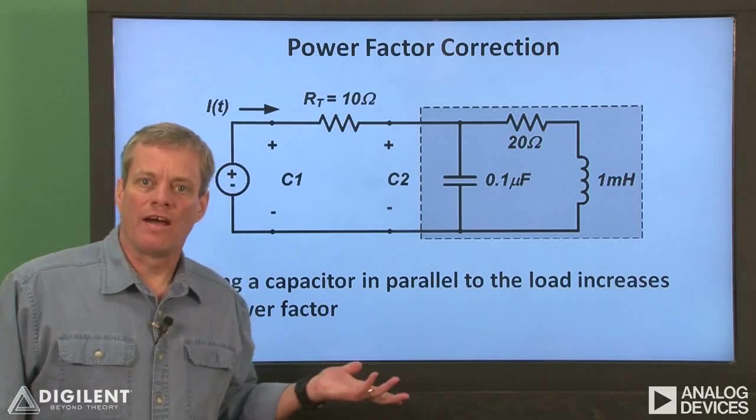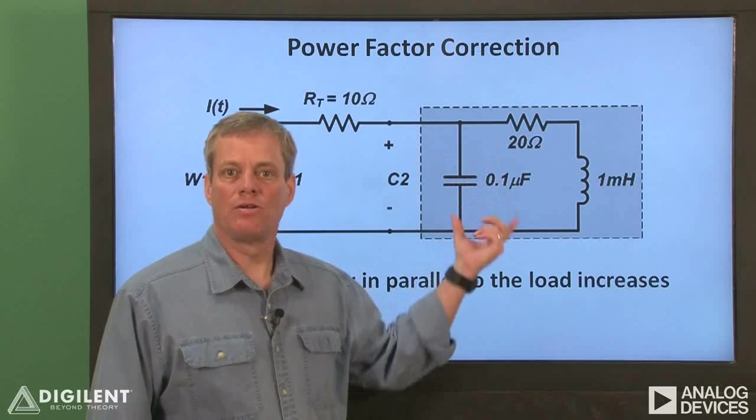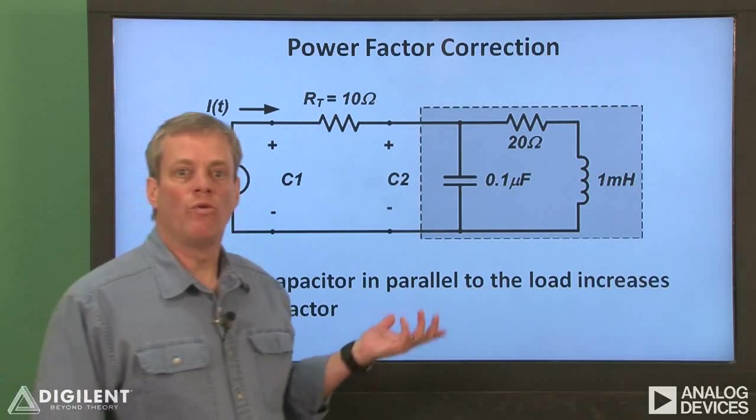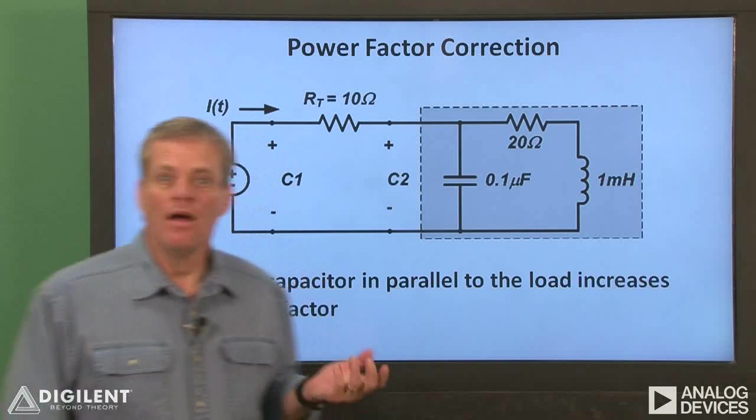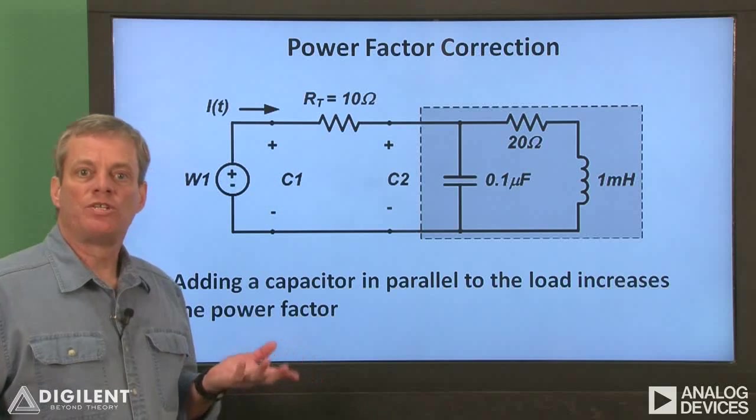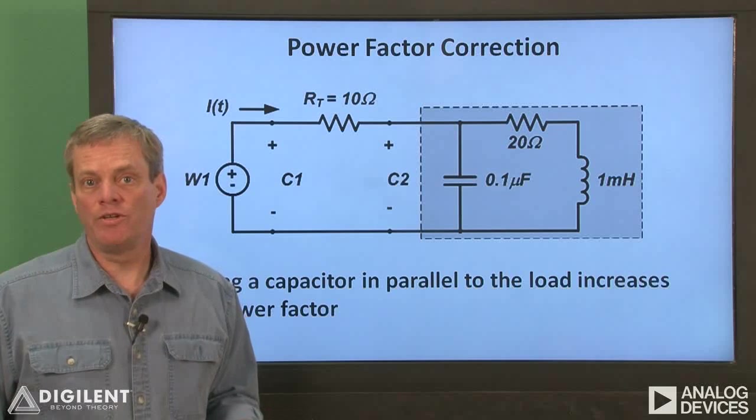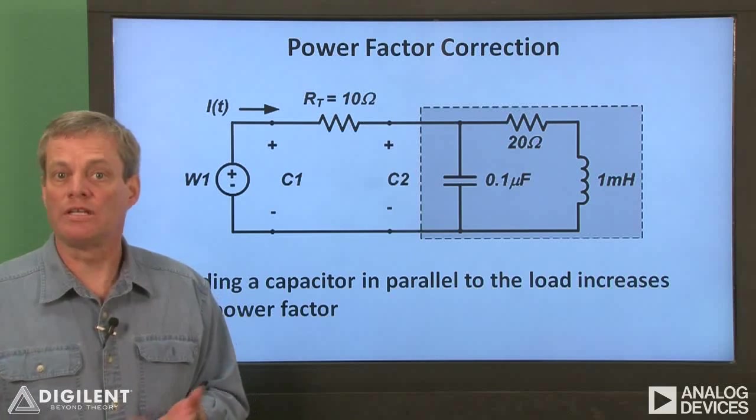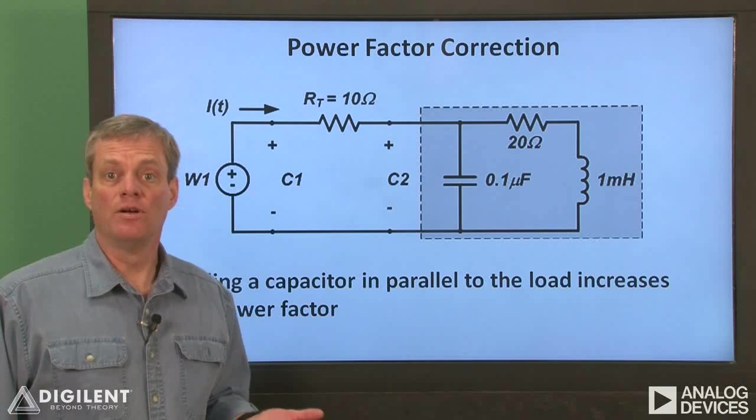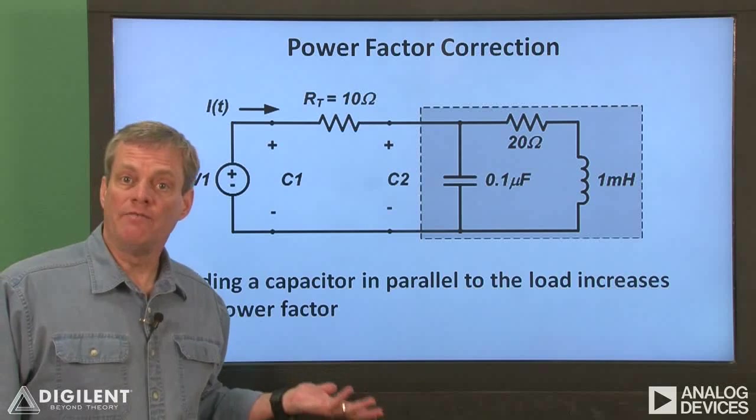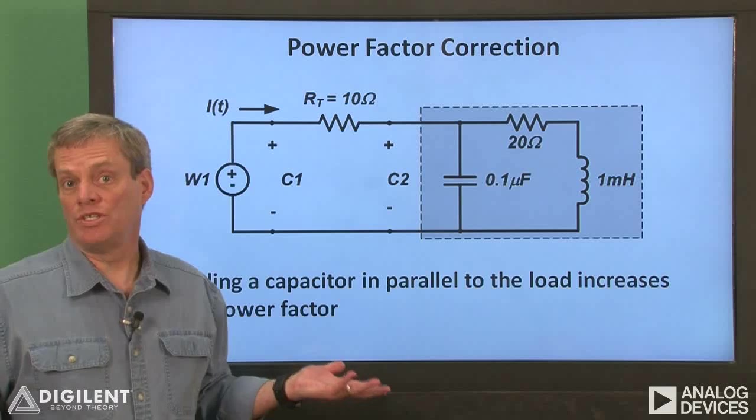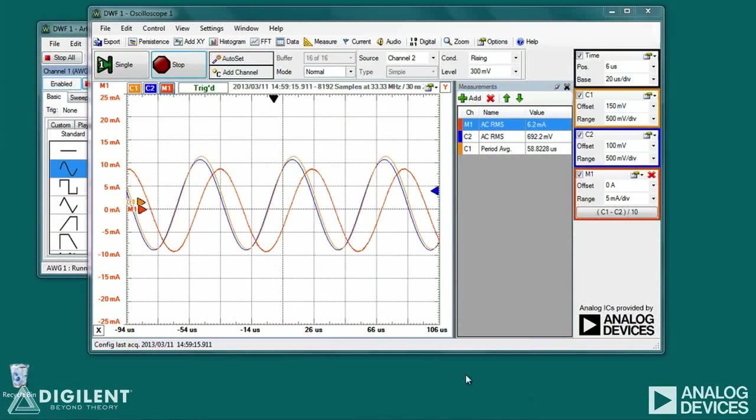Let's try to correct our power factor by adding a capacitor in parallel with the load. We'll use a 0.1 microfarad capacitor. Our goal in adding this capacitor is to reduce the imaginary component of the load impedance. This should reduce the phase difference between the load voltage and the load current and thus increase the power factor. Ultimately we want theta v minus theta i to be close to 0. Our waveform software settings are the same as for the previous circuit. I just need to plug the capacitor into our circuit and note the differences in the readings.